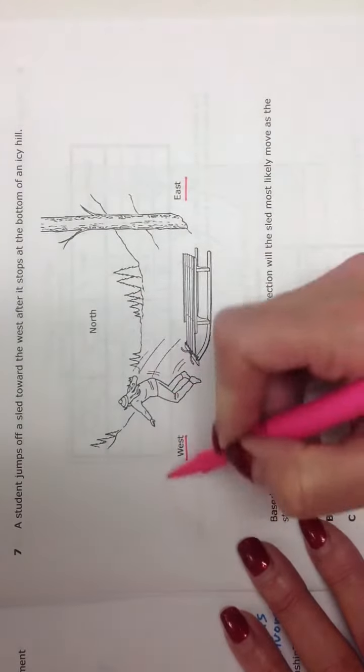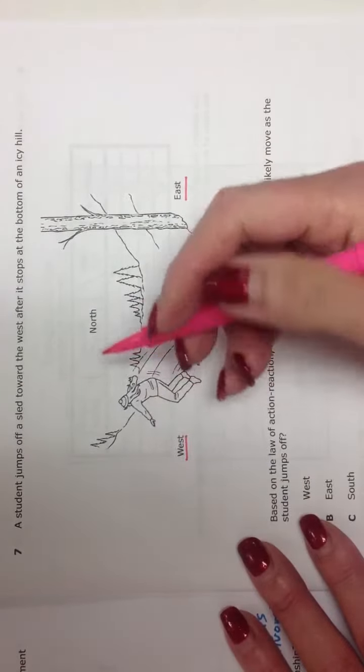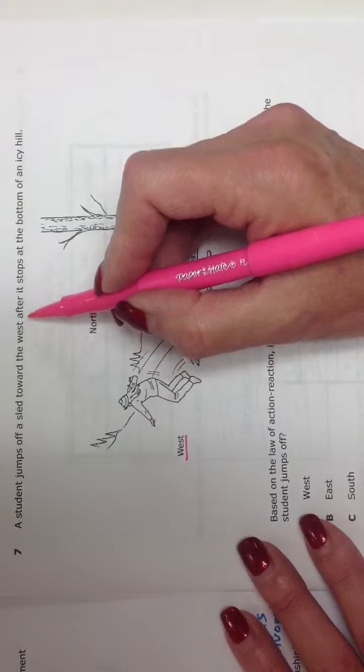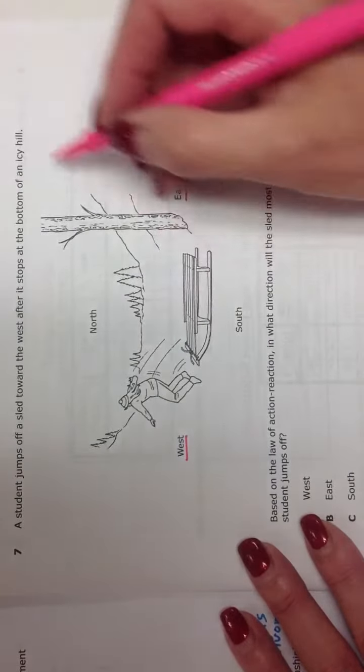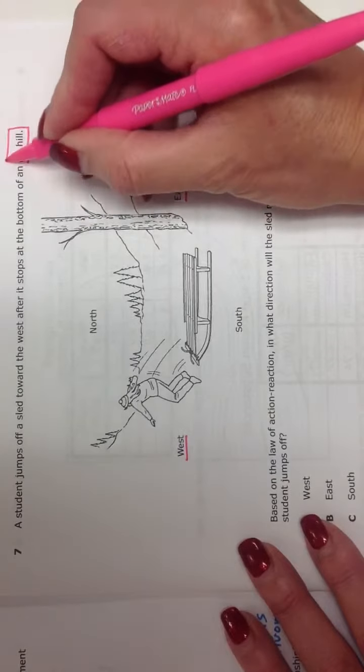Okay, he's jumping that way. We can see that. And he jumps off after the sled has stopped at the bottom of the hill. But the hill is icy. There's a key condition right here.